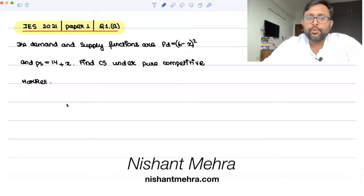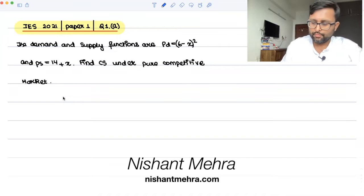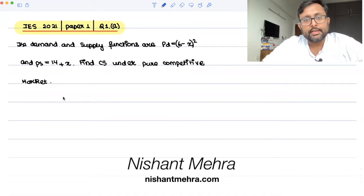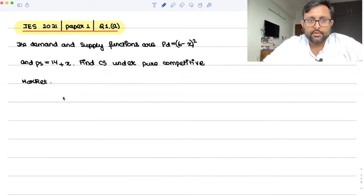This question appeared in IES 2021 paper, question 1a. The demand and supply functions are given to you. Pt equals six minus x square whole square, and ps equals 14 plus x. Find consumer surplus under pure competitive market.